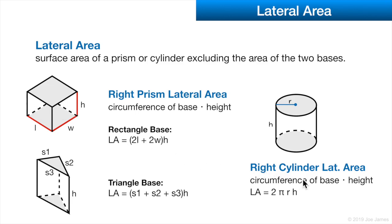For a right cylinder, the lateral area is the circumference of the base times the height. We know the circumference of a circle is 2π r. We multiply that by h, which gives us the lateral area.